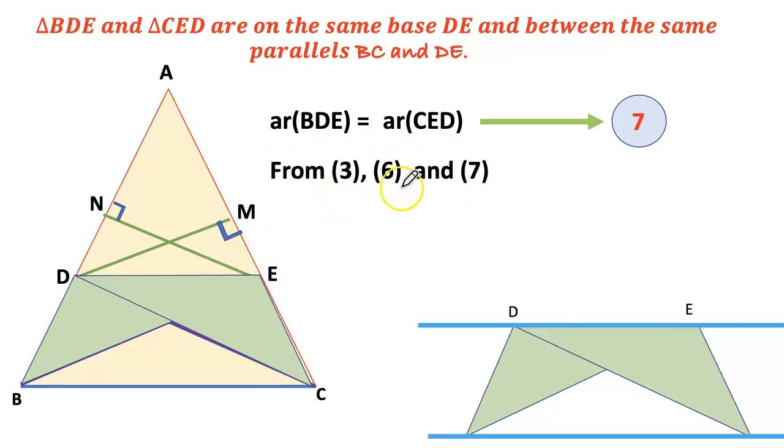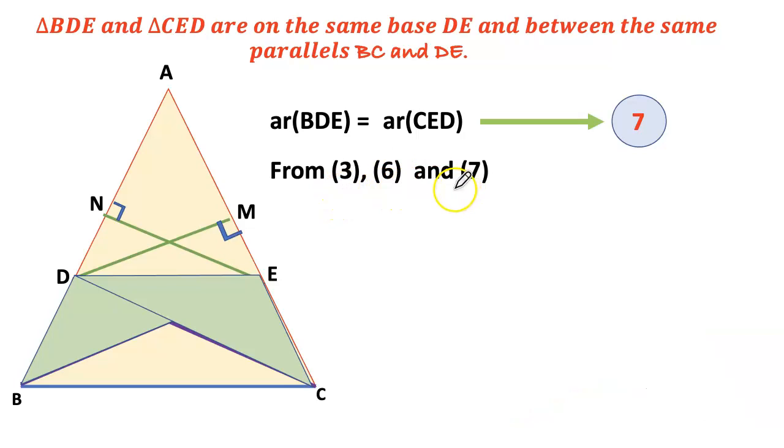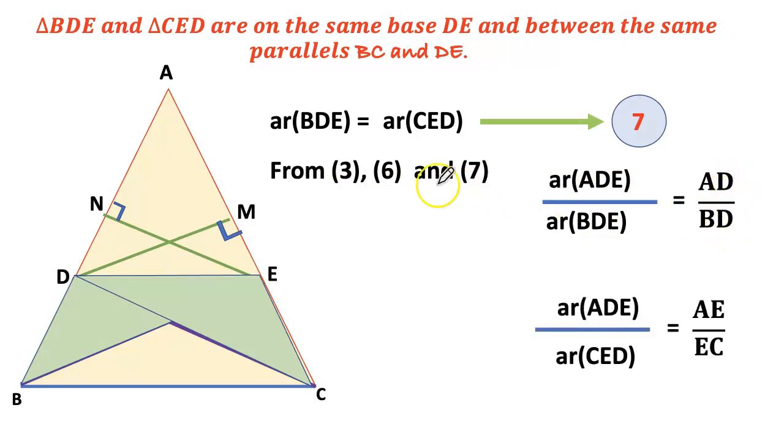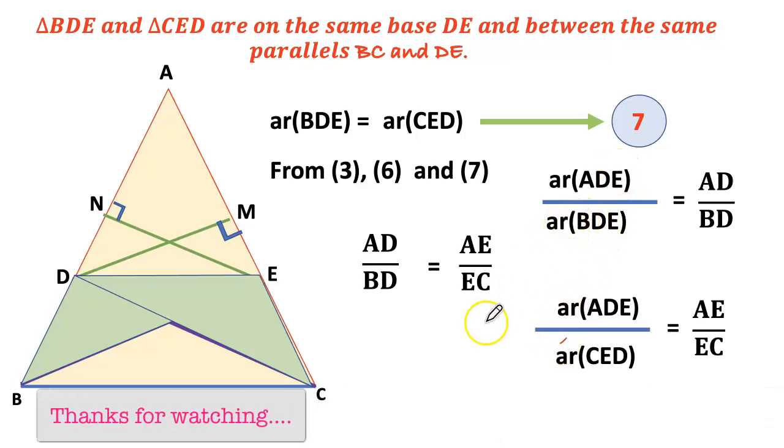From equation 3, 6 and 7. From equation 3, area of ADE by area of BDE, which equals AD divided by BD. From equation 6, area of ADE by area of CED equals AE by EC. We can conclude from both AD by BD equals to AE by EC. So these both becomes equal. I hope it's clear.